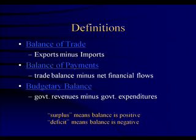If government revenues minus government expenditures produce a positive result, you have a budget surplus — that is, you're getting in more money than you're spending. If your government revenues are less than your government expenditures, then you have a budget deficit.